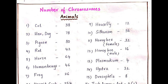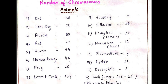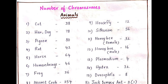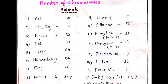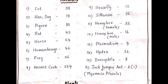Let's have a look at the number of chromosomes in organisms. Cat has 38 chromosomes. Chromosomes generally exist in pairs, so 38 chromosomes in cat means there are 19 pairs. Chromosomes existing in pairs are called diploid chromosomes; single chromosomes are called haploid. Here we are providing the total diploid number. So cat has 38 chromosomes, that means 19 pairs. Hen and dog have 78 chromosomes, which is 39 pairs.